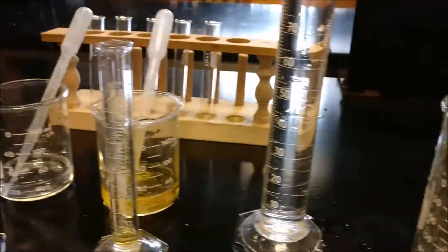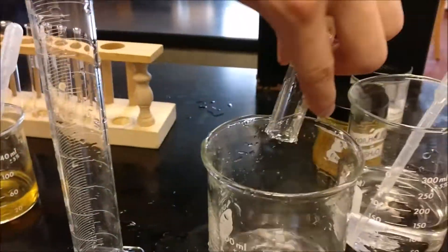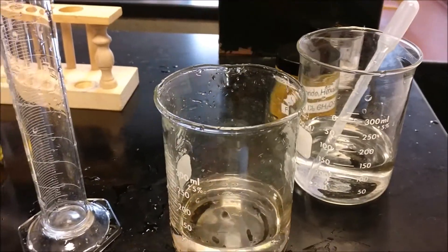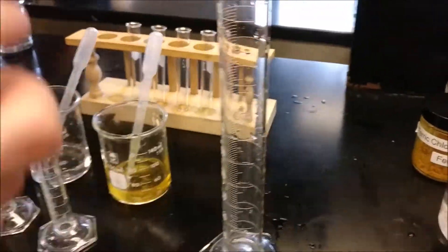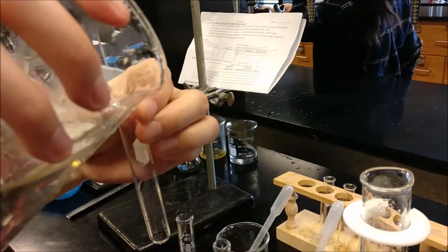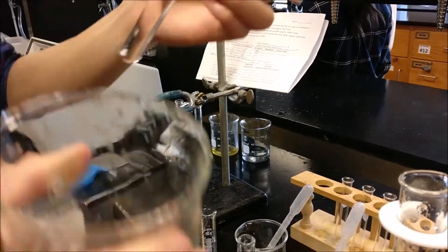Measure out 98 ml of water in the 100 ml graduated cylinder and pour it into the large beaker. Add the sodium thiocyanate solution and iron-3-chloride solution into the water. Swirl the solution and pour it into the first test tube so it's about three quarters full. Dispose of the rest in the sink.